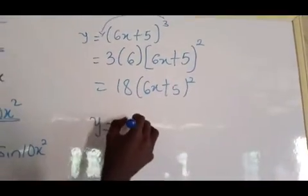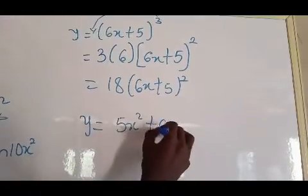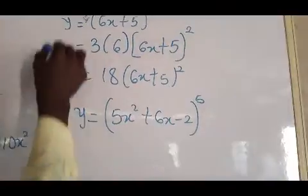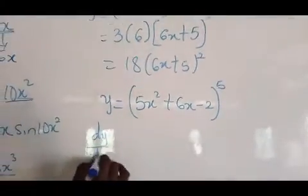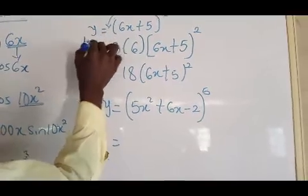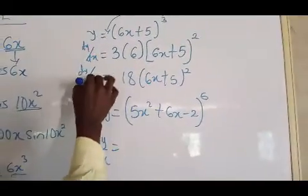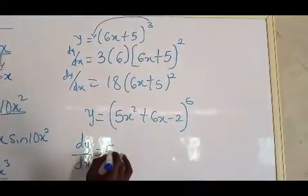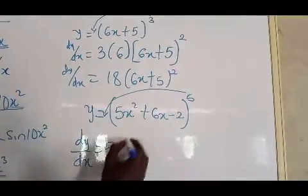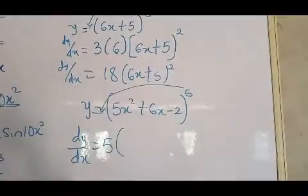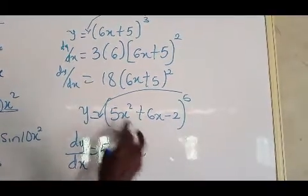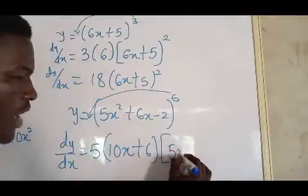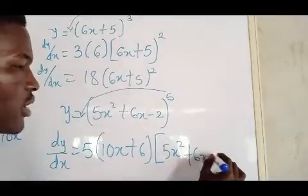Let's say we have y equals (5x² + 6x - 2) to the power 5. dy/dx: drop the power 5, like this: 5, differentiate the brackets, you get 10x + 6, then write the bracket back: (5x² + 6x - 2) to the power 4.